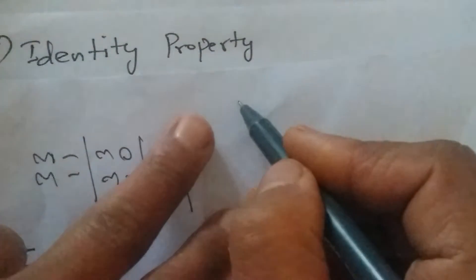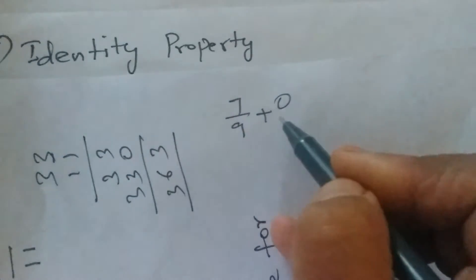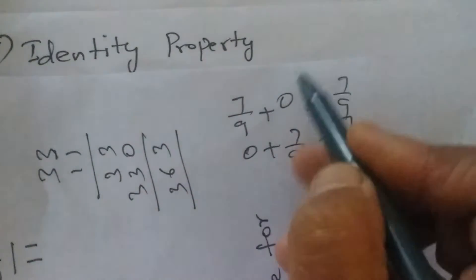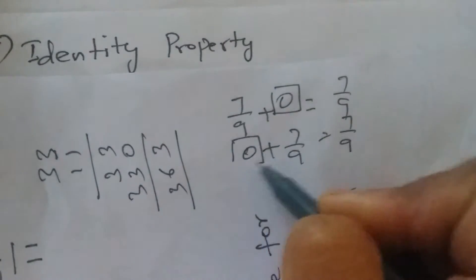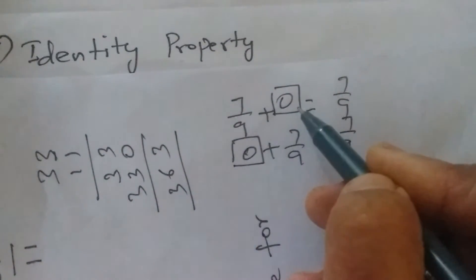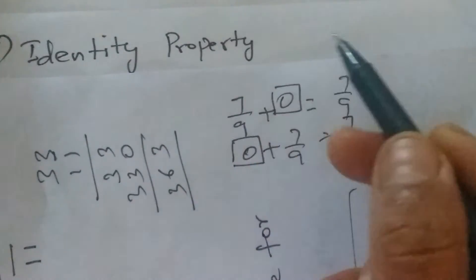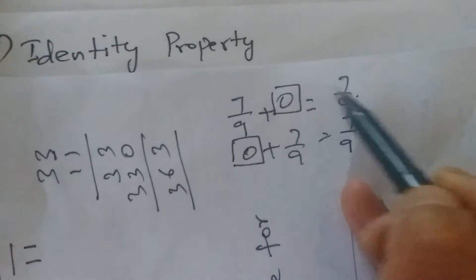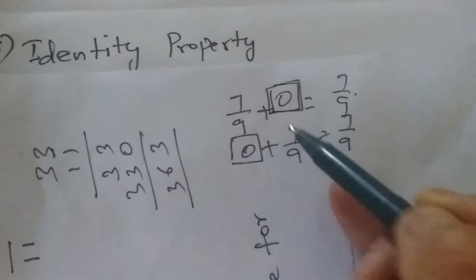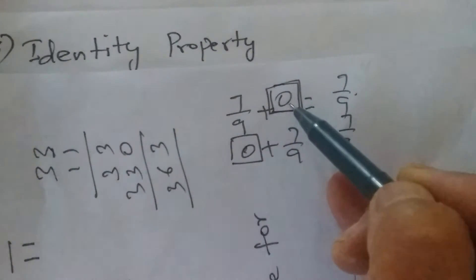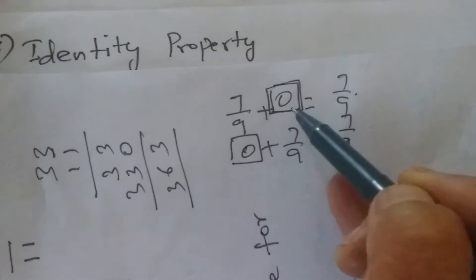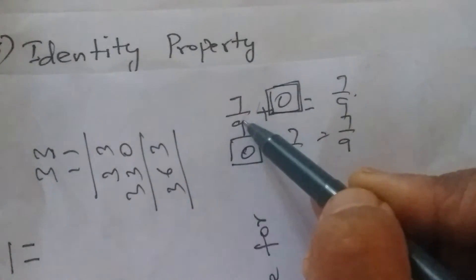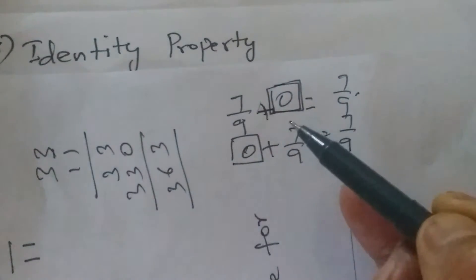Identity property means: when you add any number with 0, or add 0 with the number, you should get the same number as the answer. So 0 is called the identity element of addition. Whatever number you add with 0 — however big or small, positive or negative, integer or rational — we always get the same number back. That is the speciality of 0.